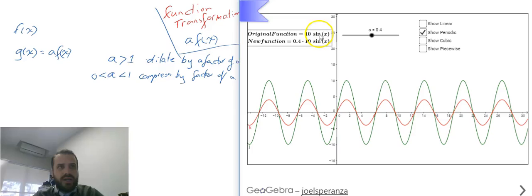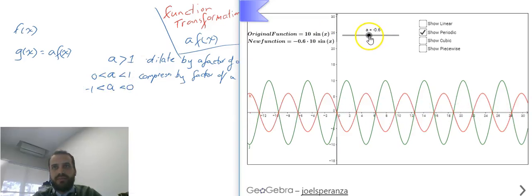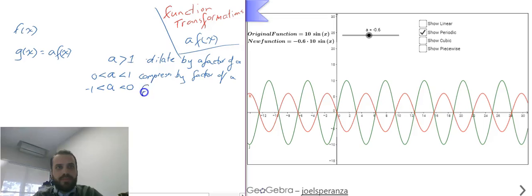Alright, if I go a between negative 1 and 0, it's going to flip upside down and compress. And you can see it's flipped and it's compressed.